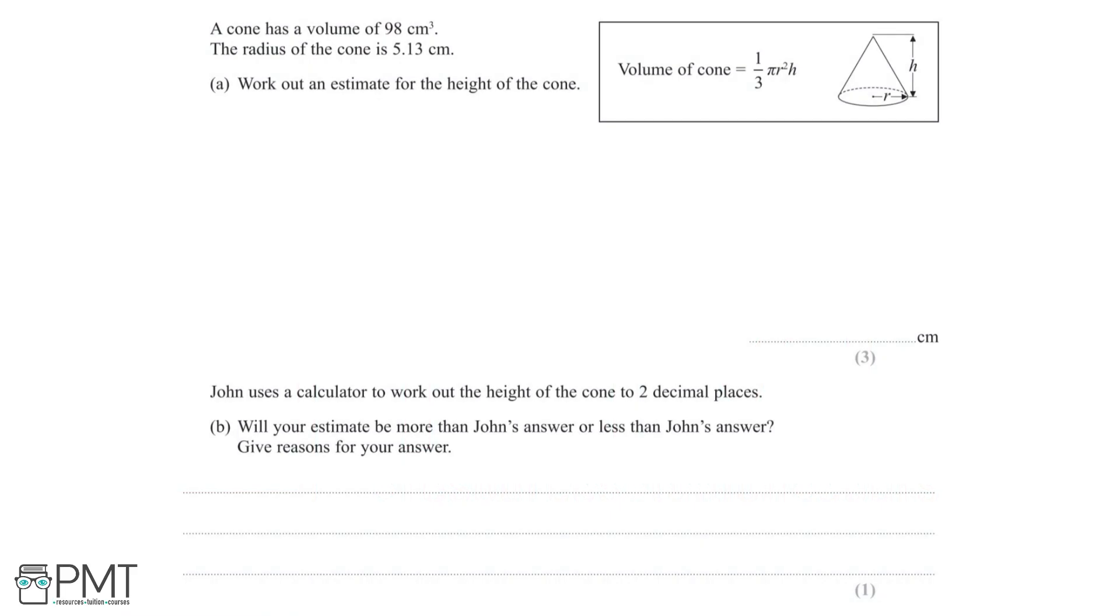In this question, we are told that a cone has a volume of 98 cm³, and the radius of the cone is 5.13 cm. We are also given the formula for the volume of a cone, which is one-third π r² h.